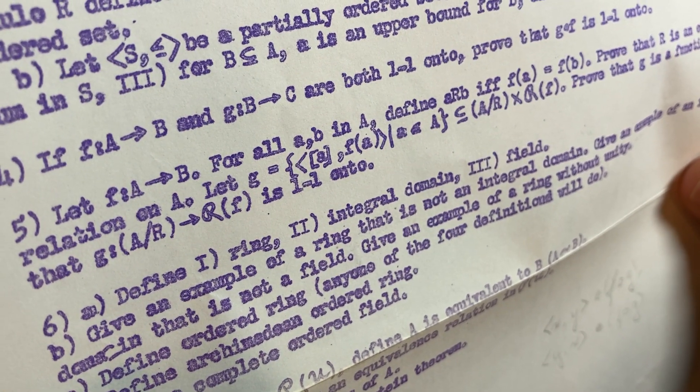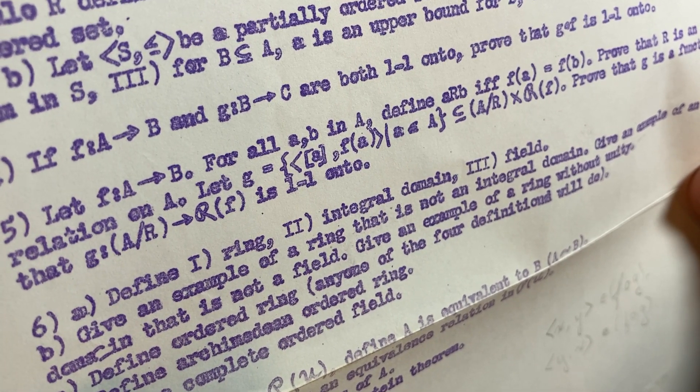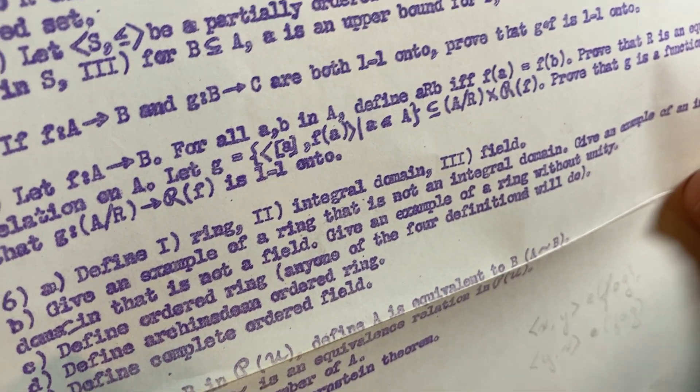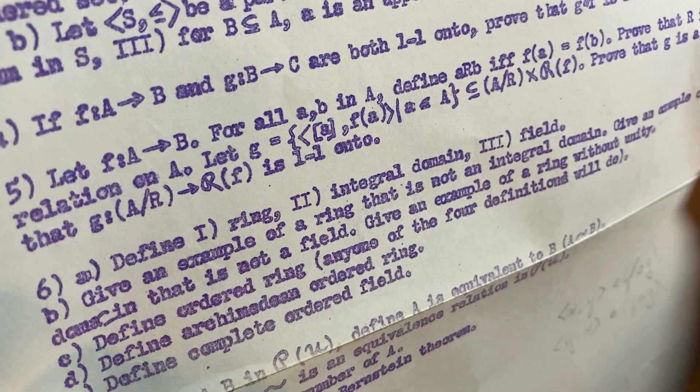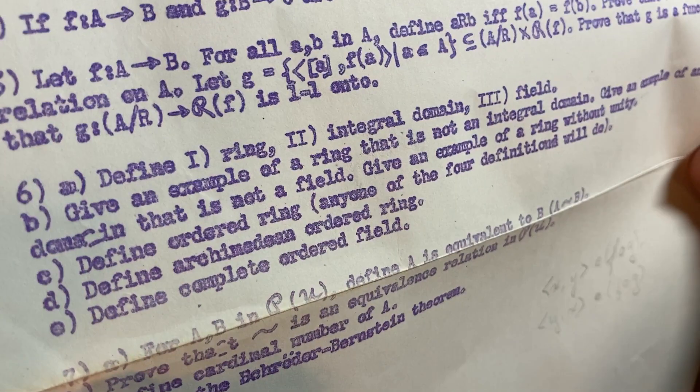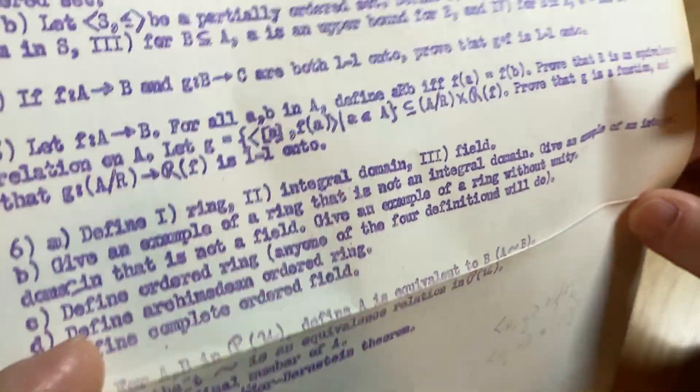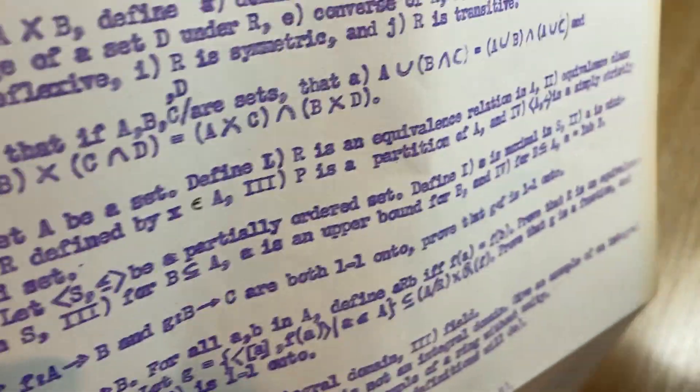Give an example of a ring that is not an integral domain. Give an example of an integral domain that is not a field. Give an example of a ring without unity. Okay. And then define ordered ring, define Archimedean ordered ring, define complete ordered field. So key definitions, right? They're asking, this test asks for key things.